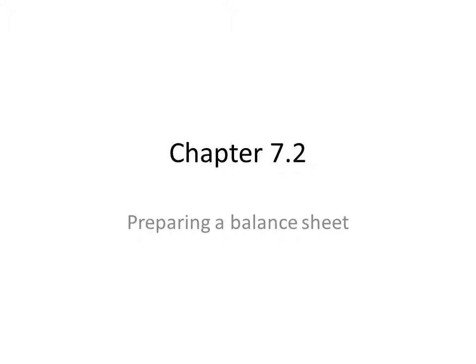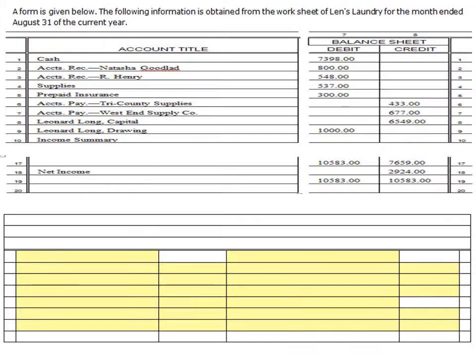Chapter 7.2: Preparing a Balance Sheet. Once again, as with previous lessons, we've been working our way through the accounting cycle. Last lesson, 7.1, we prepared the income statement. Now we're going to prepare the balance sheet. This is one of four financial statements used by companies: income statement, balance sheet, statement of cash flows, and statement of owner's equity. Let's take a look at it.